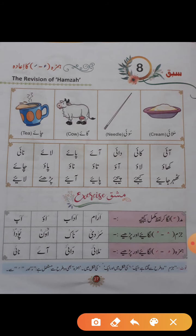آو، ناؤ، تاؤ، ناؤ، پاؤ۔ اور اس کے بعد ہے: ٹھہر جائیے — اس میں جا، اور زیر اے، حمزہ زیر اے، جائیے، ٹھہر جائیے۔ پھر ہے کیجئے، پیجئے، پائیے۔